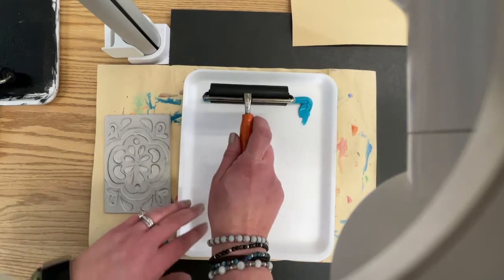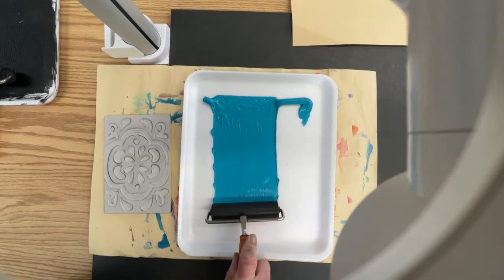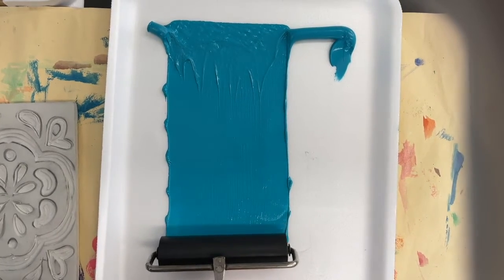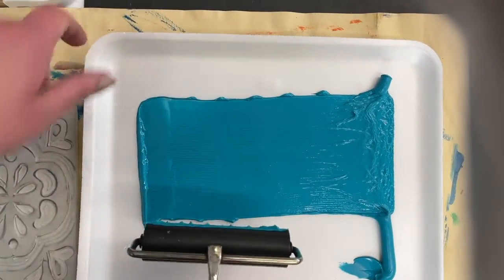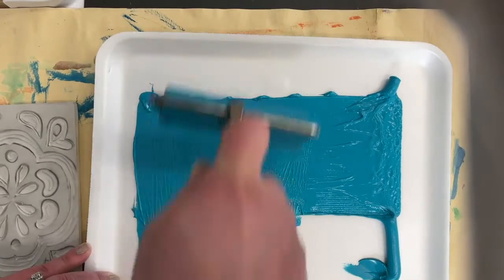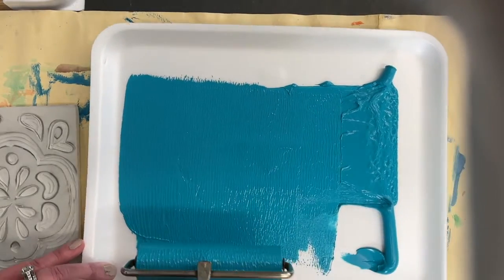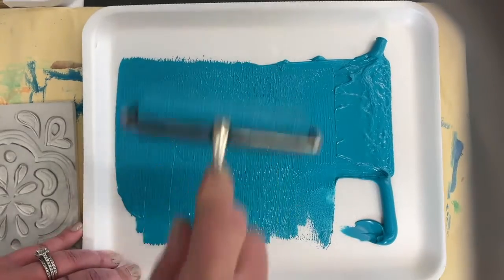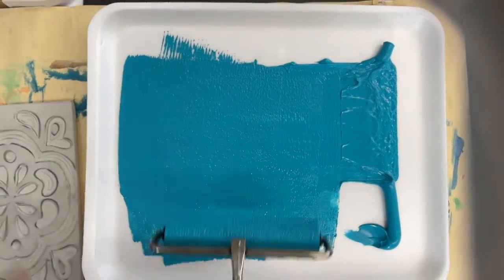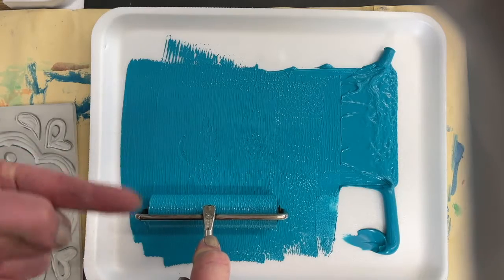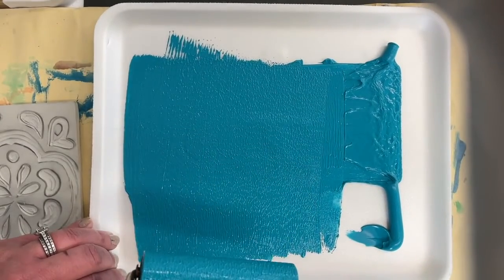You're going to have a pool of ink at the top of your ink tray. You're going to take your brayer and you're going to put it in the ink and pull straight down. Do you see that my brayer is not currently moving? It's just pulling that straight down. Now I'm going to roll all the way through.